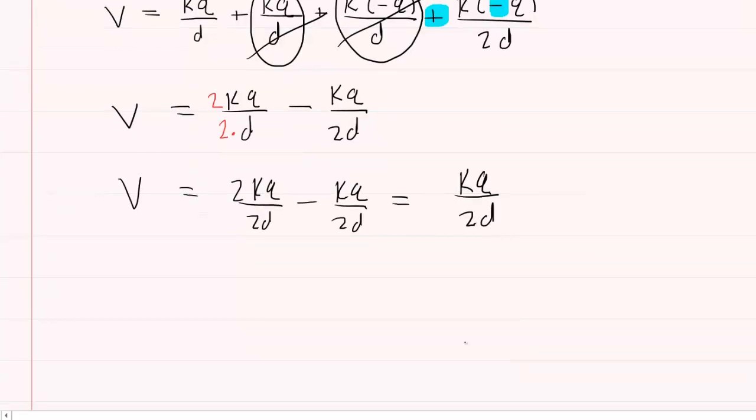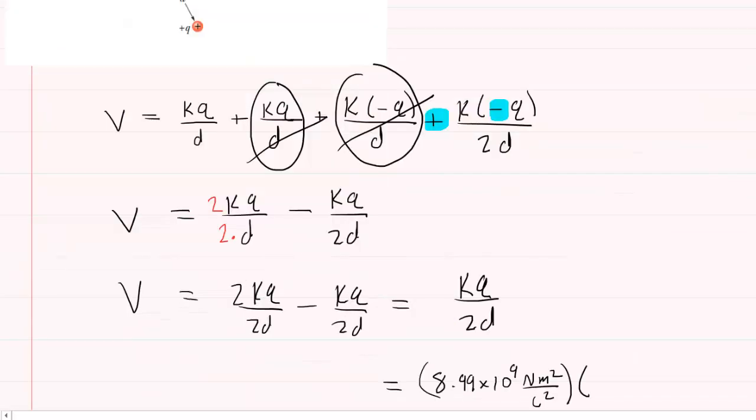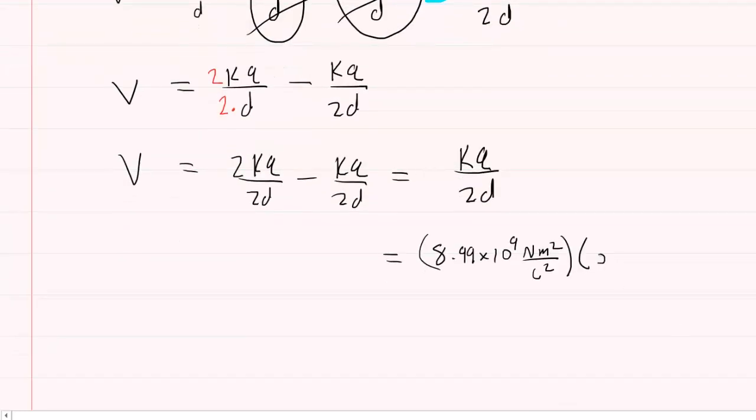So now it's just a matter of plugging in known values. We know k is a constant. It's 8.99 times 10 to the power of 9. And the unit there is newton meters squared per coulomb squared. This will be multiplied by q which is the charge value given in the question. That q was given as 5 femtocoulombs.